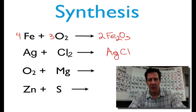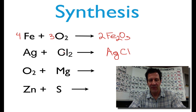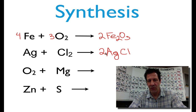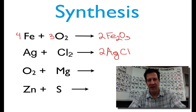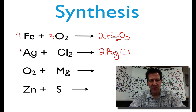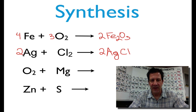Chlorine forms a minus one charge, so we have a one-to-one ratio of silver to chloride. We have two chlorines on the left, so we put a coefficient of two there. That means we have two silvers, so we put a coefficient of two in front of silver. That equation is balanced.